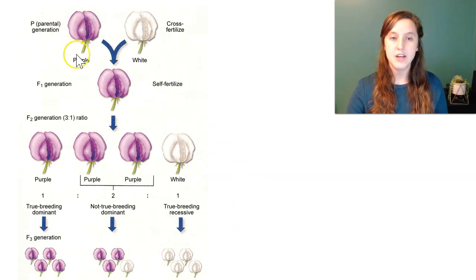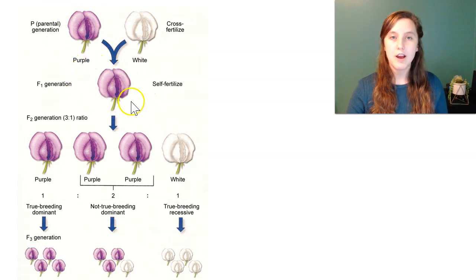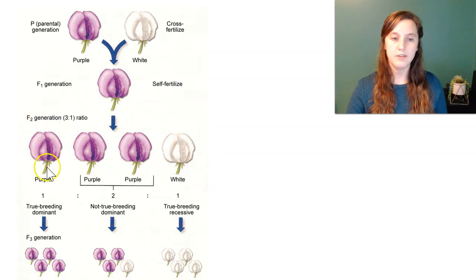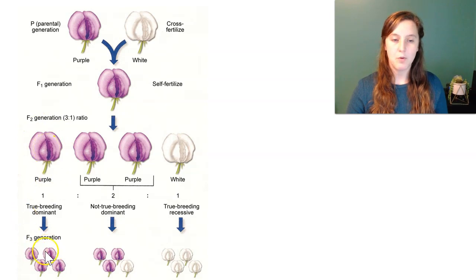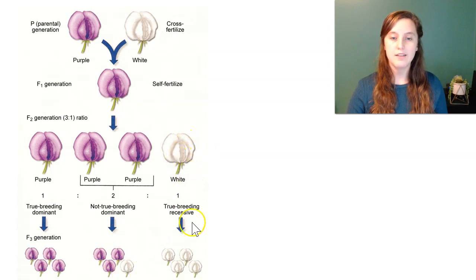Because the gene for purple flowers is dominant, this was shown in all the F1 population, but when you cross these, one-fourth of the time you got white plants again. If you cross purple plants that had both dominant alleles, you got all purple plants. But if you cross certain combinations, you got the same three-to-one ratio. If you cross white plants, you would get all white.